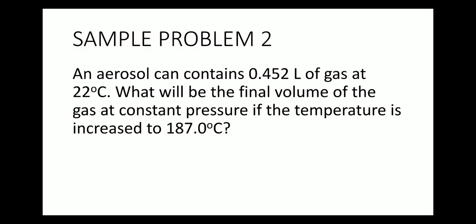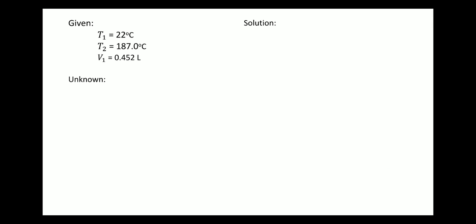Number 2. An aerosol can contains 0.452 liter of gas at 22 degrees Celsius. What will be the final volume of the gas at constant pressure if the temperature is increased to 187.0 degrees Celsius? Given: T1 is 22 degrees Celsius, T2 is 187.0 degrees Celsius, V1 is 0.452 liter. The unknown is V2.